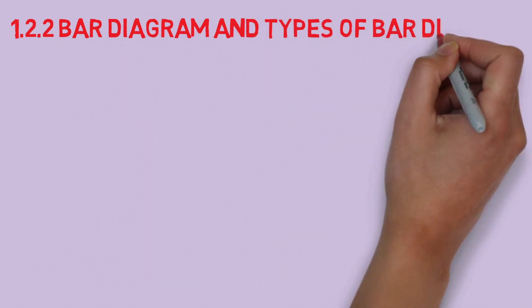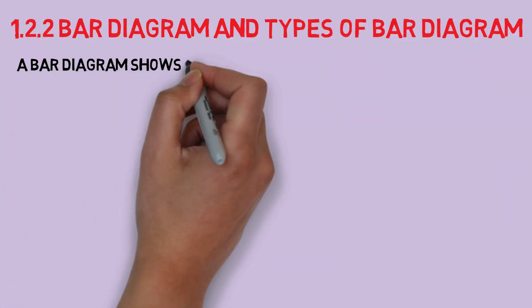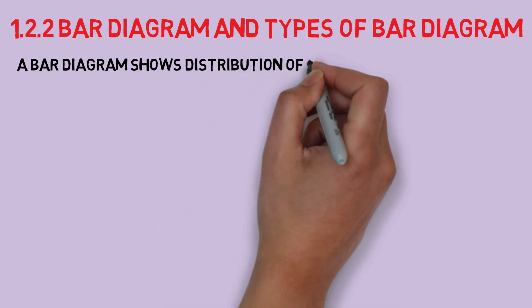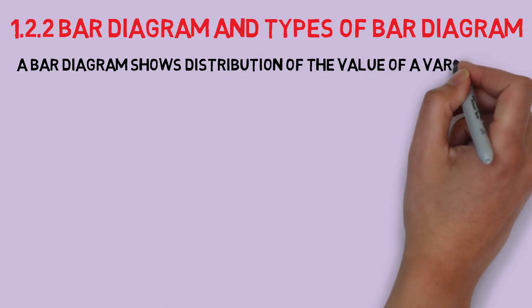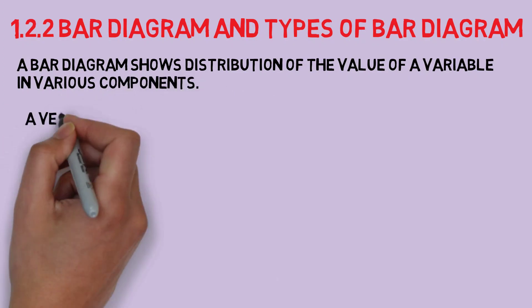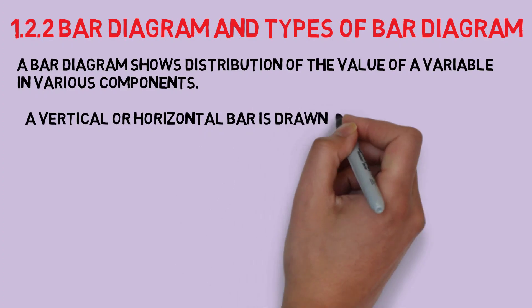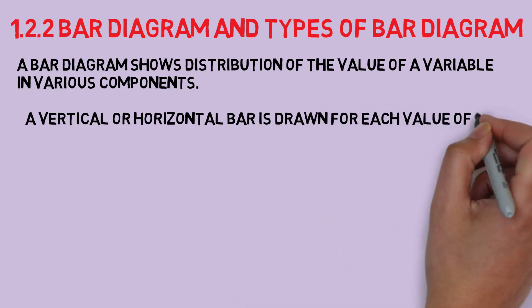Bar diagram and its types. The bar graph is a chart that uses bars to show comparisons between categories of data.